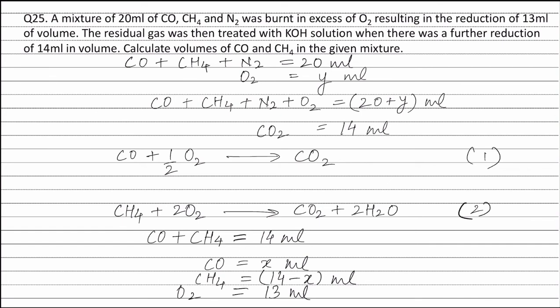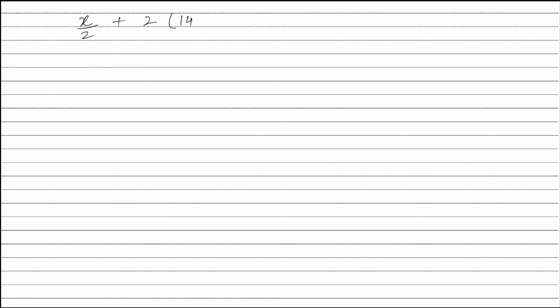In equation 1, X ml of carbon monoxide reacts with X/2 ml of oxygen to form X ml of carbon dioxide. In equation 2, (14 minus X) ml of CH4 reacts with 2 times (14 minus X) ml of oxygen to form (14 minus X) ml of carbon dioxide. Therefore, the total volume of oxygen used in the reaction is X/2 plus 2 times (14 minus X), which is equal to 13 ml.